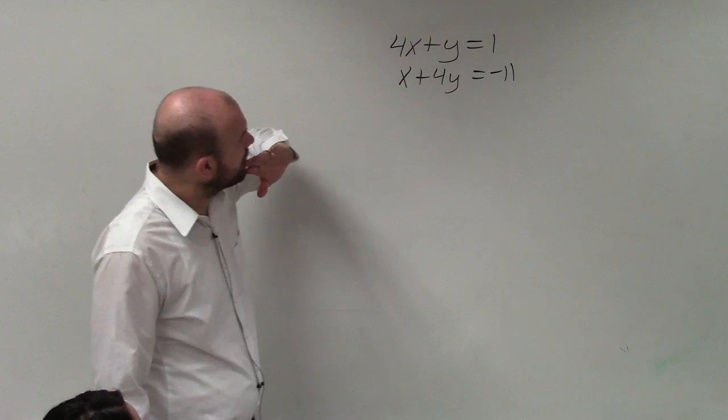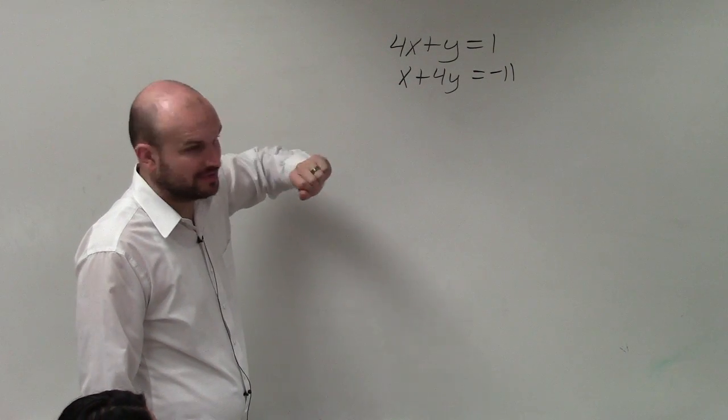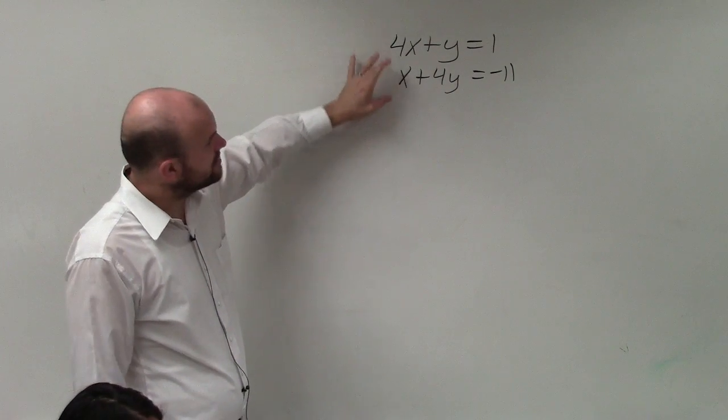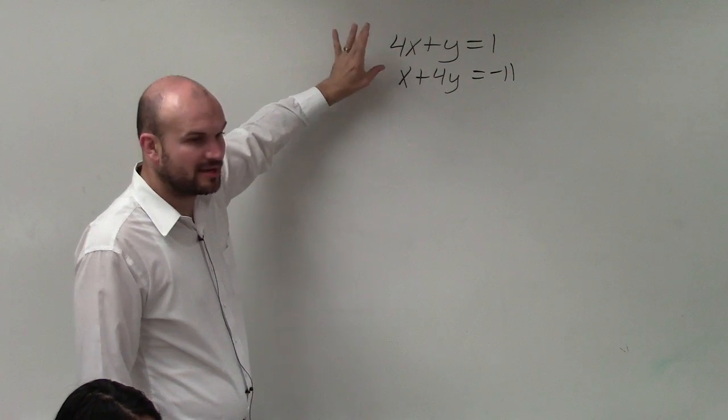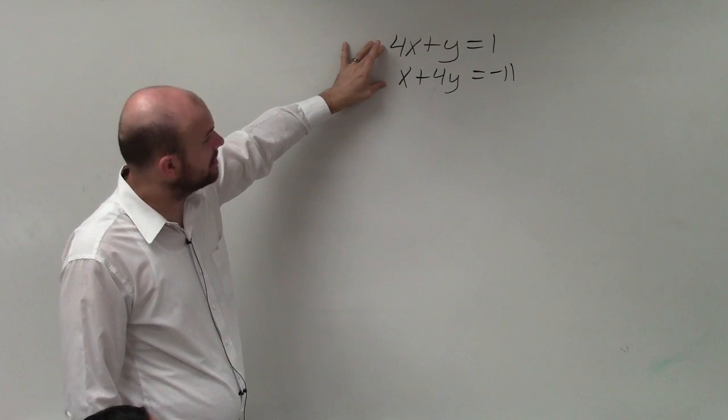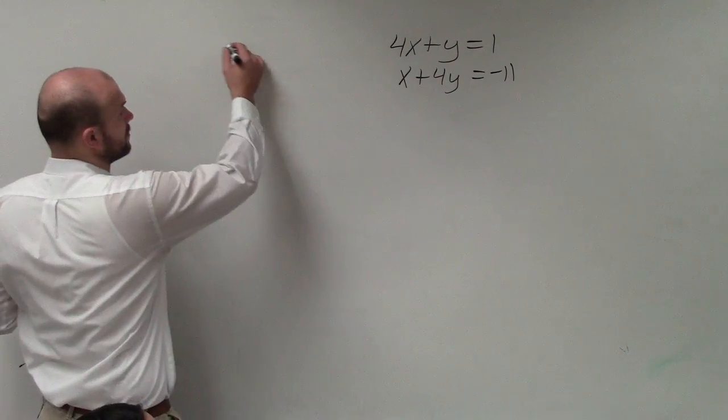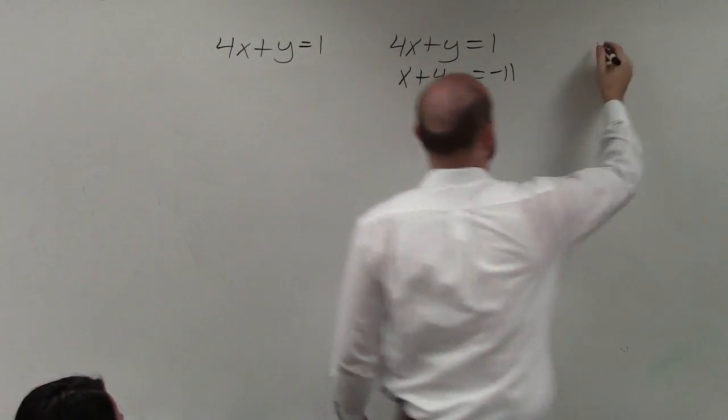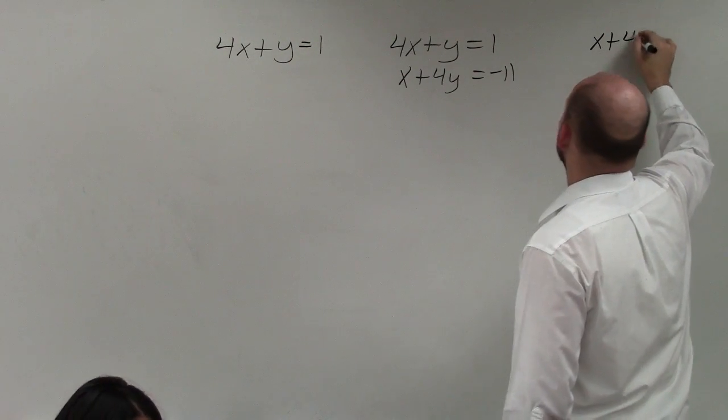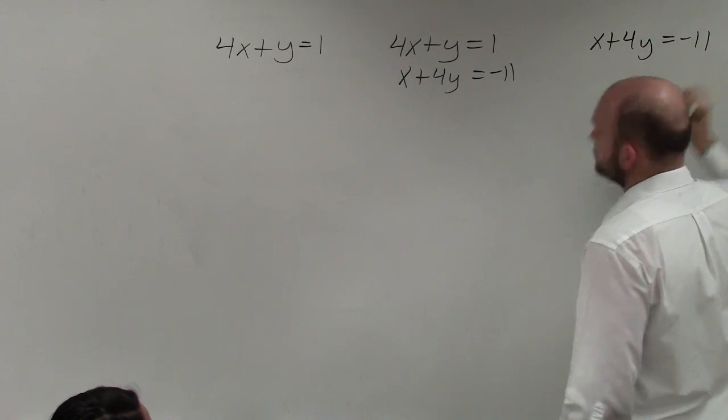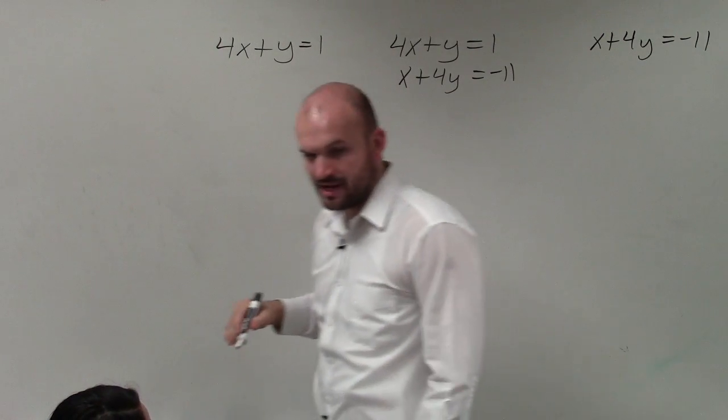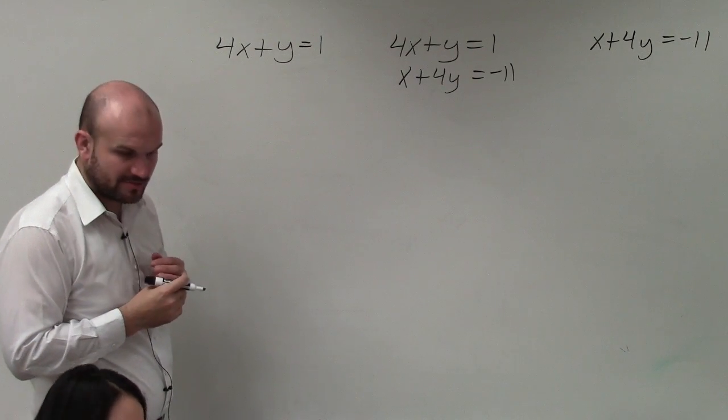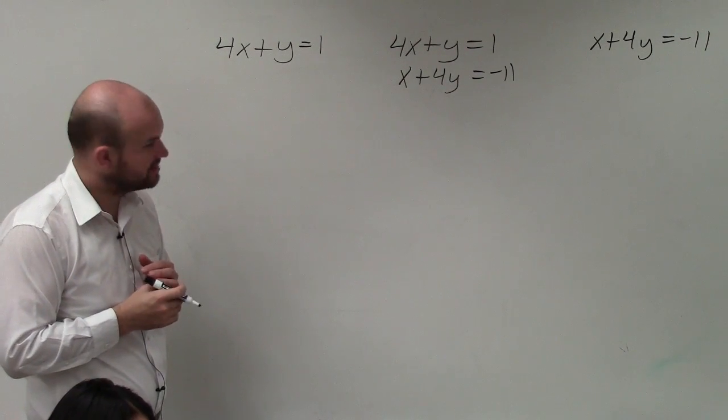So here I have 4x plus y equals 1, and x plus 4y equals negative 1. So basically what I need to do is graph each one of these separately. So hopefully you guys remember that when we're graphing, these are both in standard form. To graph in standard form, you can either use the intercept method, or you can use converting them to slope intercept. What is this problem called? Solving systems of equations by graphing, 3.1.